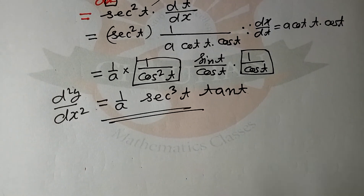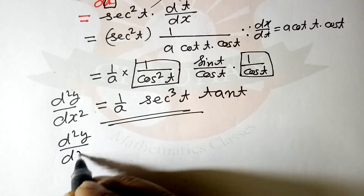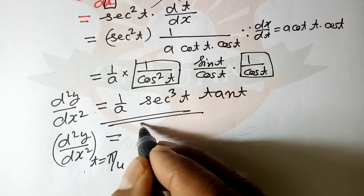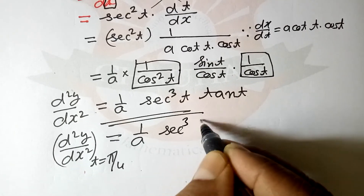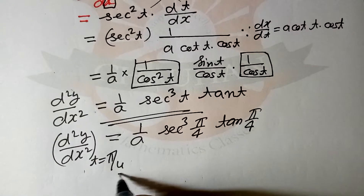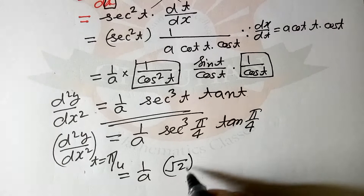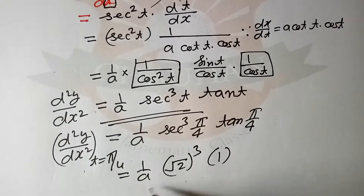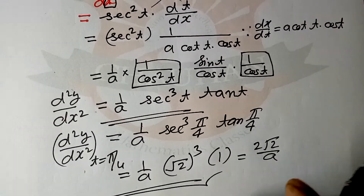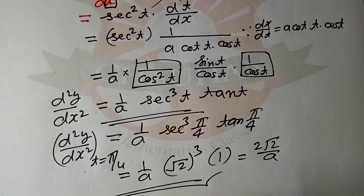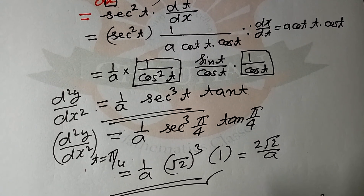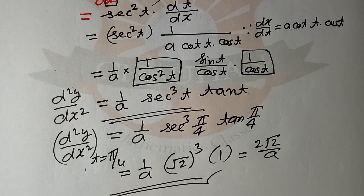Supposing that d²y/dx² is demanded at t = π/4, then putting t = π/4: (1/a)·sec³(π/4)·tan(π/4) = (1/a)·(√2)³·1 = 2√2/a. In this video it is up to here. In the next video we will solve some other standard example. Thank you.